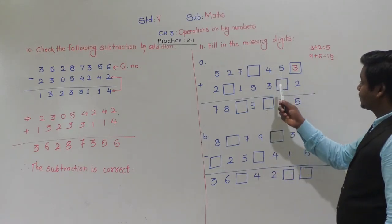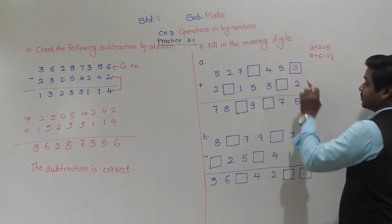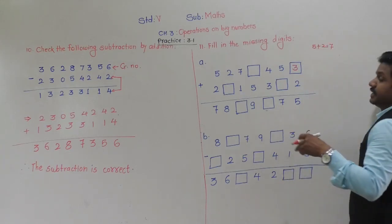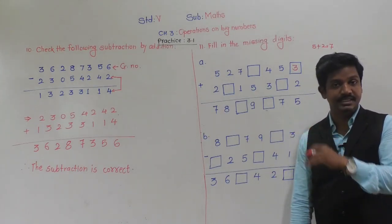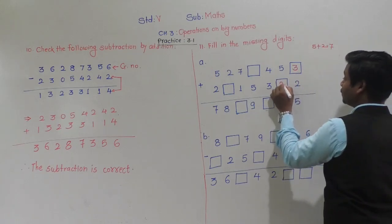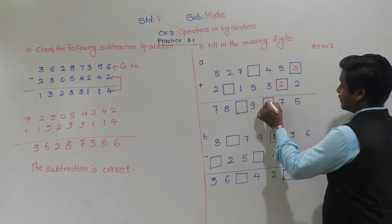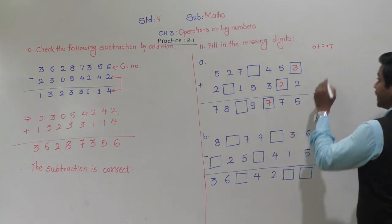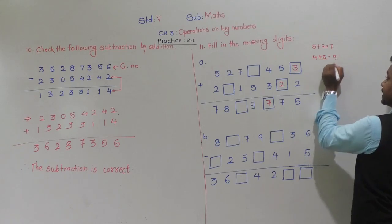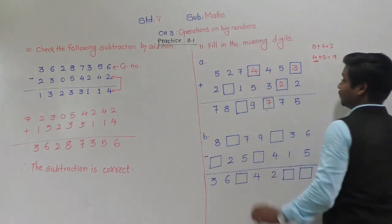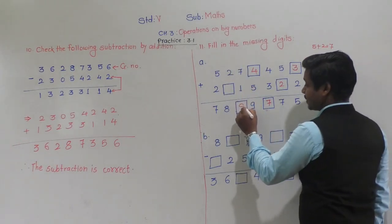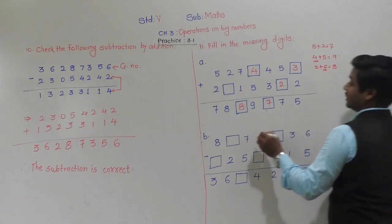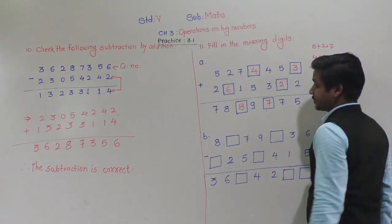5 plus dash equals 7 — so the missing digit is 2, since 5 plus 2 equals 7. Dash plus 5 equals 9 — so the missing digit is 4, since 4 plus 5 equals 9. Then 7 plus 1 equals 8. 2 plus dash equals 8 — so the missing digit is 6, since 2 plus 6 equals 8. And 5 plus 2 equals 7. These were the missing digits found for the addition problem.